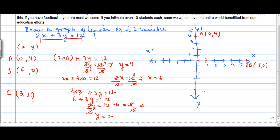Point C says x is equal to 3 which is here and y is equal to 2 which is here. So this point should lie somewhere here. C, 3, 2.